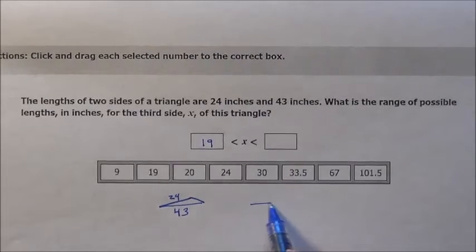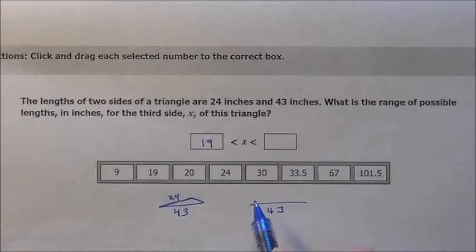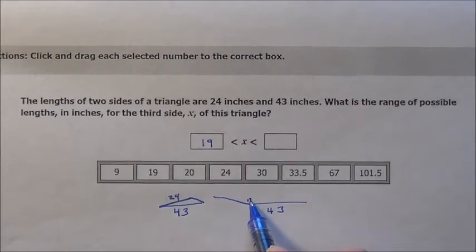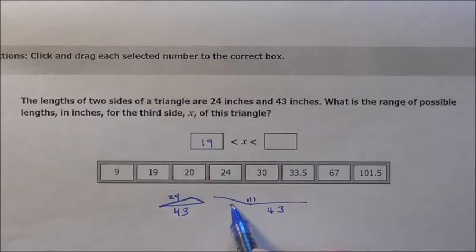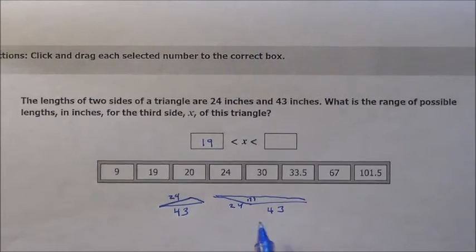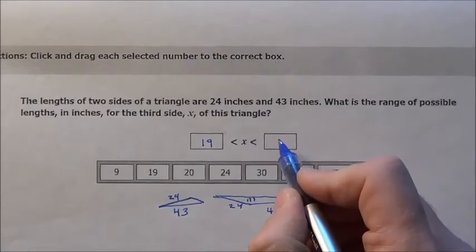The longest you could make it is if the side was out 43 and this side was bent just barely at like 179 degree angle and this was 24, then that length back would be almost these two added. Not quite, but almost, which when you add them you get 67.